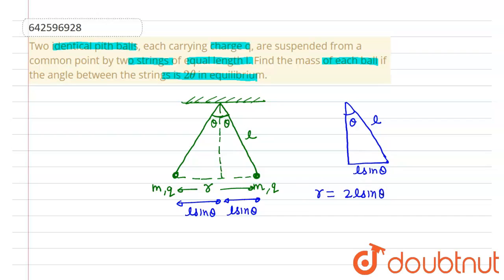Now if we consider here the tension is T, then this angle will be θ. So this will be T cos θ, and this will be T sin θ, and the electrostatic force of repulsion Fe equals kq² upon r².